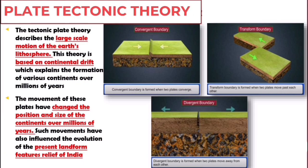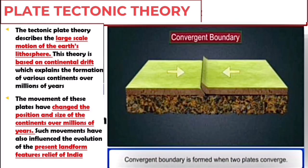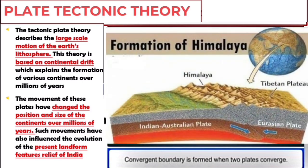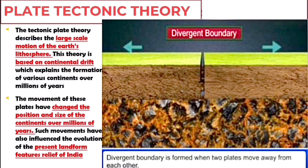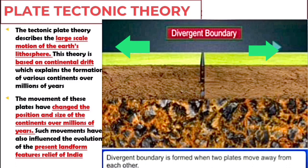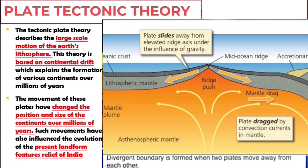The plate tectonic theory depends upon three plate boundaries. The first is the convergent boundary, where two plates converge or move towards each other and overlap. For example, the Himalayan mountains are basically formed at a convergent boundary. The second is the divergent boundary, where the plates move away from each other. As the plates move away, it either leads to faulting or magma from the core tends to come up on the earth's crust because of the gap created.